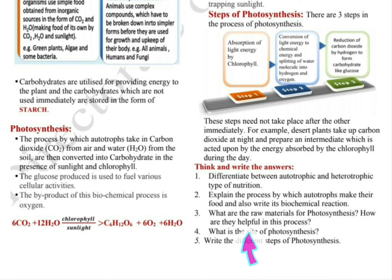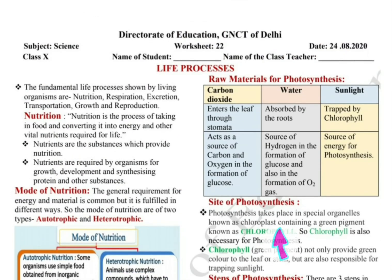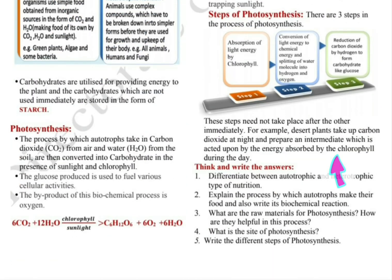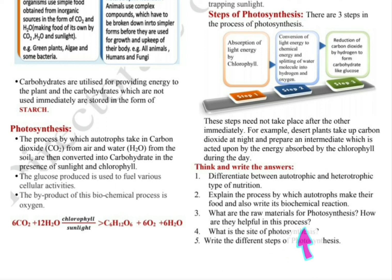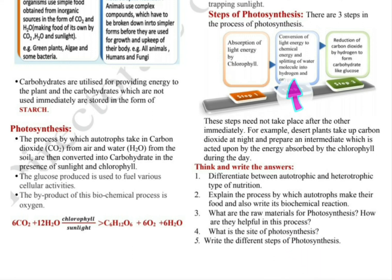How are the raw materials helpful in this process? The answer is in the second column — what role each plays is given there. Question 4: What is the site of photosynthesis? The site is chloroplast, which contains chlorophyll. Question 5: Write the different steps of photosynthesis — there are three steps as discussed. I hope this worksheet is clear. If there are any doubts, you can ask in the comments section. Thank you.